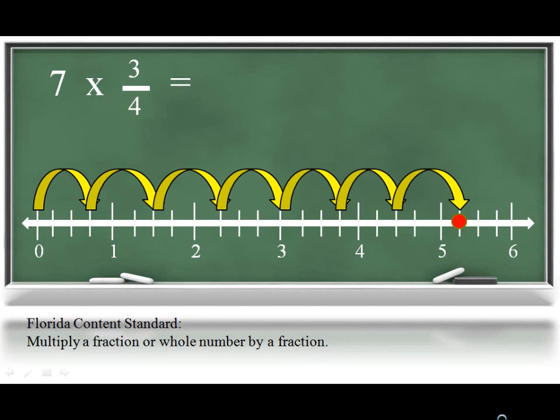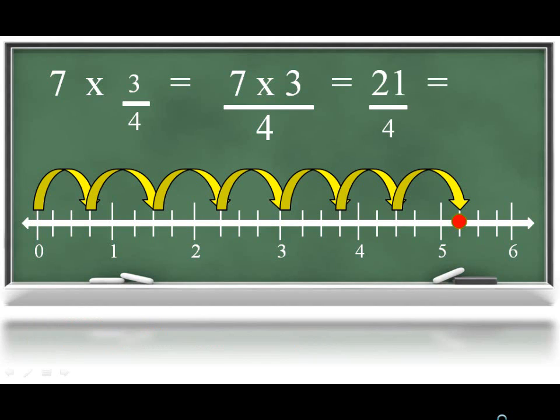After the student understands conceptually how to find the whole number of groups of a fractional amount, we would want them to try to relate their model to the more efficient algorithm. 7 groups of 3 fourths would be 21 fourths, using multiplication, which can be rewritten as 5 and 1 fourth.